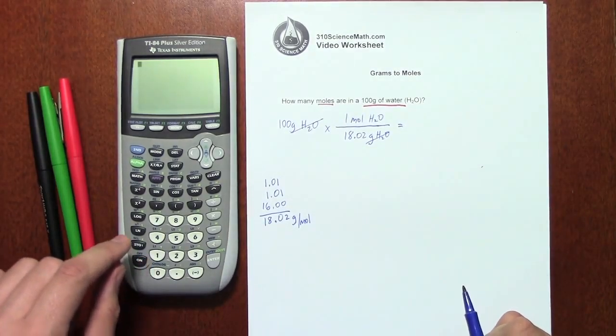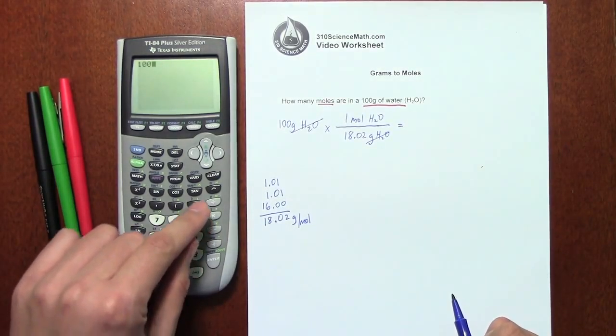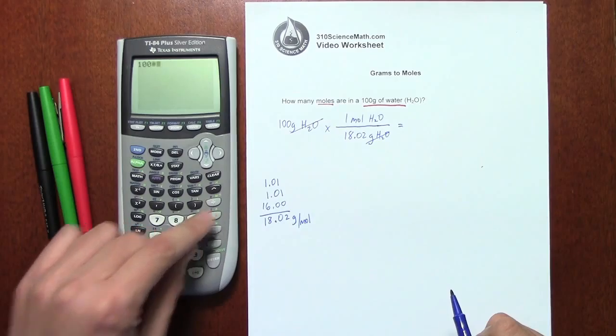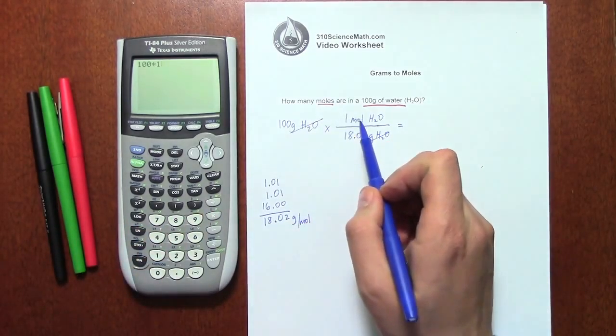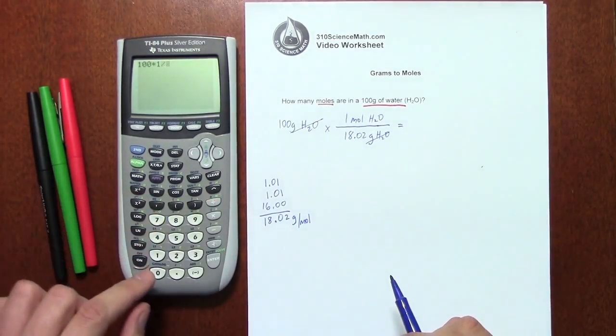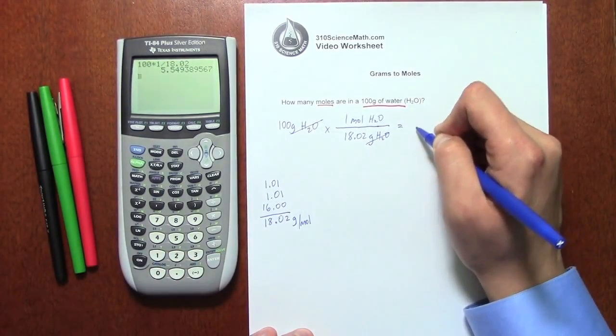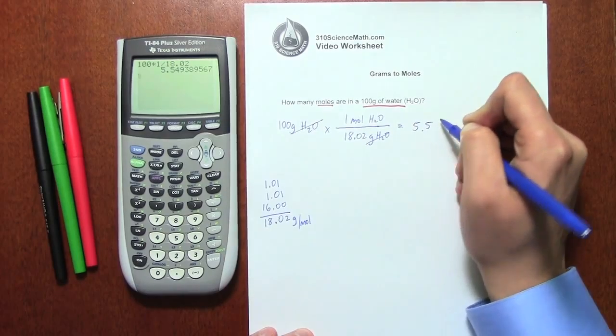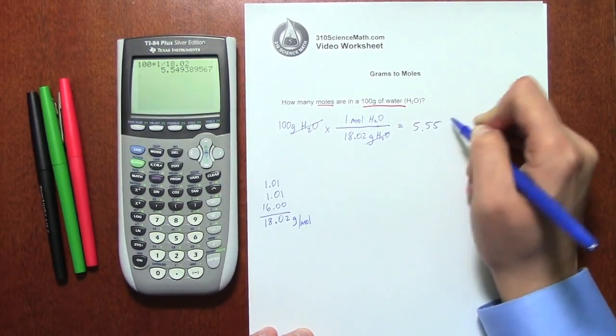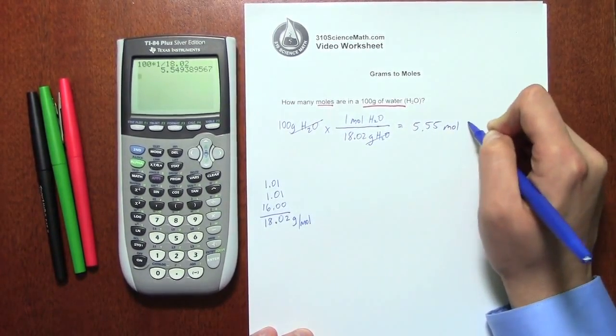So we're going to need to use the calculator to figure out the rest of this. So I'm going to type in 100 times 1. You're going to multiply the tops, and then divide the bottom, which is 18.02. And that makes my final answer 5.55 moles of H2O.